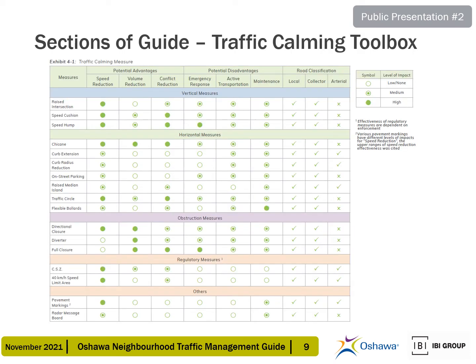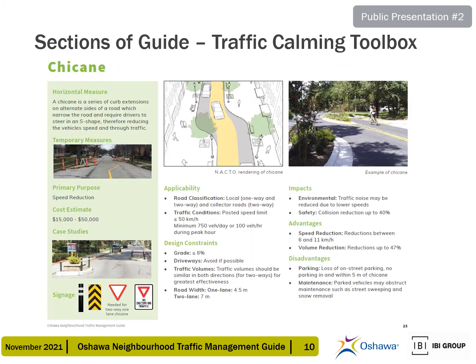The updated Neighborhood Traffic Management Guide has a traffic calming toolbox to aid city staff in determining which measures might be suitable to resolve a given issue. Proposed new traffic calming measures are categorized as vertical deflection, horizontal deflection, obstructions, and regulatory. The table shown here summarizes all traffic calming measures in the toolbox with a quick look at their respective advantages, disadvantages, and where they may be implemented. Each measure is also described in detail elsewhere in the guide, with its purpose, approximate cost, applicability, impacts, advantages, and disadvantages outlined.